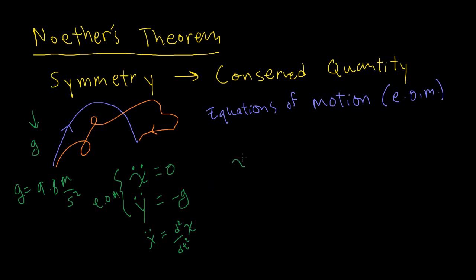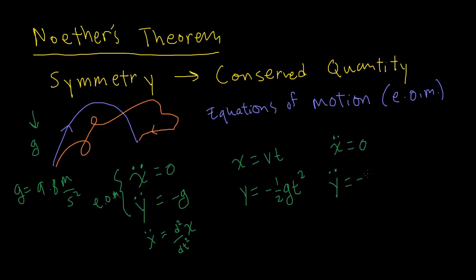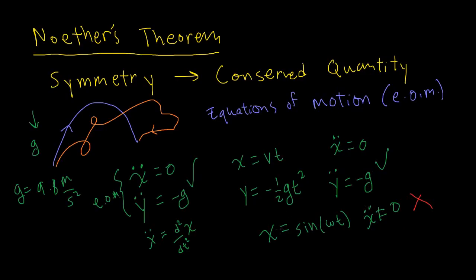So those are your equations of motion, where X is your X coordinate, Y is your Y coordinate, and double-dot means your second time derivative. If you have a path X equals VT and Y equals negative one-half G T squared, you can differentiate to get X double-dot equals 0 and Y double-dot equals negative G — so it satisfies the equations of motion. But if you had something funky like X equals sine of omega times T, X double-dot wouldn't be 0, so it wouldn't satisfy the equations of motion, and that's not the path a ball would take. Solutions to the equations of motion give us physical paths.